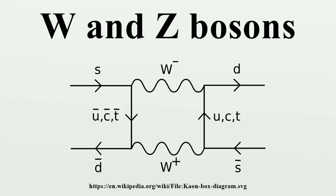The two W bosons are best known as mediators of neutrino absorption and emission, where the charge is associated with electron or positron emission or absorption, always causing nuclear transmutation.